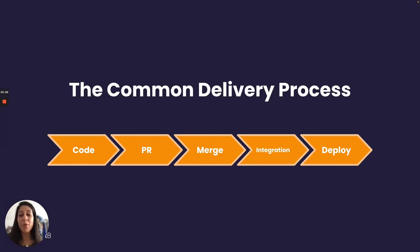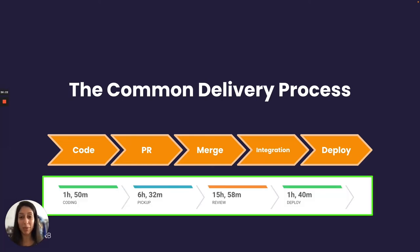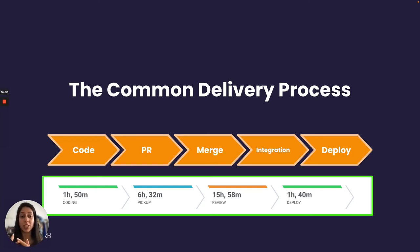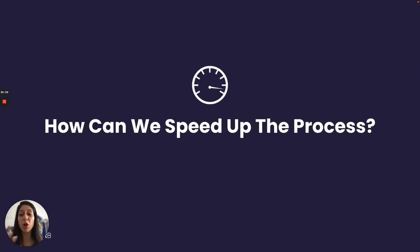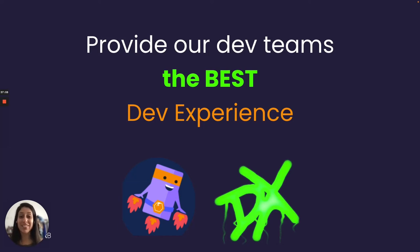I know there are many variations of this process and not all companies work the same way, but let's consider this the most common delivery process. The cycle time metric runs across the whole process — from the very first commit till the code is in production. Some companies also have QA stages, beta stages, and more — make sure you account for those when measuring your cycle time. One of our main goals as an R&D group is to provide our teams with the best development experience.